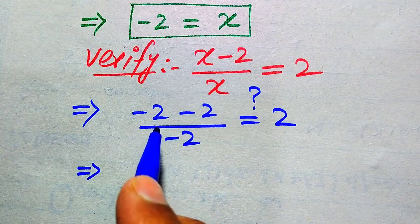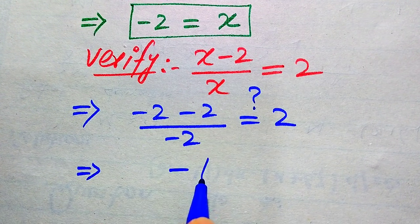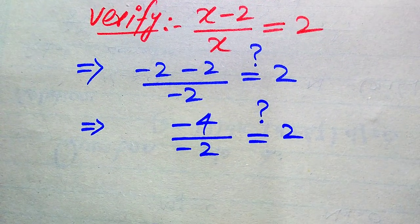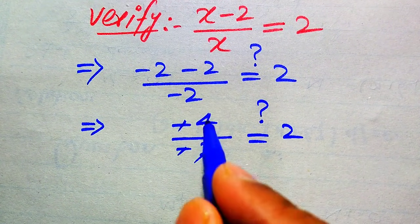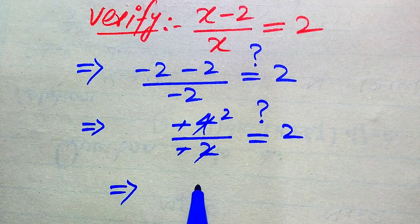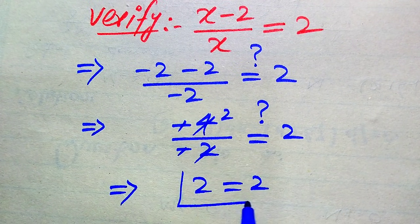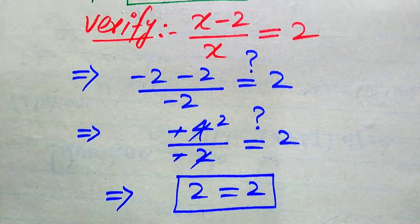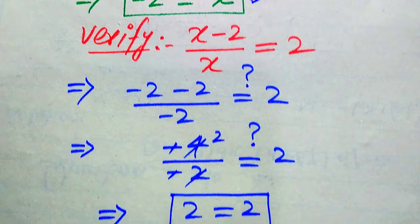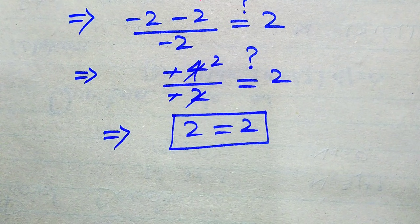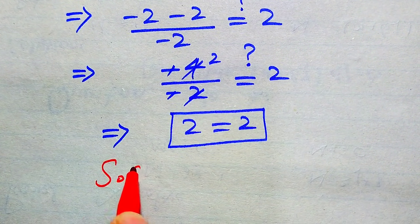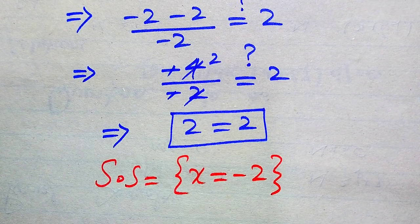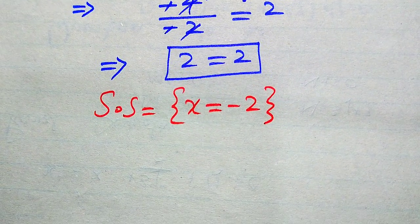Minus 2 minus 2 gives minus 4, divided by minus 2. The two negatives cancel, giving us 4 divided by 2, which equals 2. Both sides are equal, so X equals minus 2 satisfies the given equation. Therefore the solution set of the given equation contains only one root: X equals minus 2.